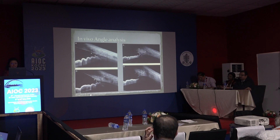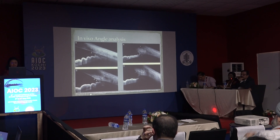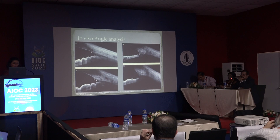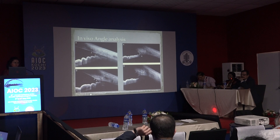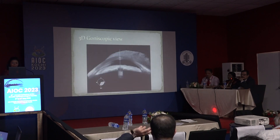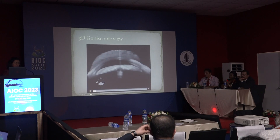One study from our center compared primary congenital glaucoma versus adult glaucomas using ASOCT, and found that in cases of primary congenital glaucoma there are actually membranes covering the trabecular meshwork. ASOCT also provides a 360-degree view of the angle.